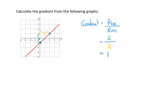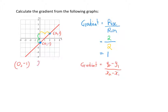I'm also going to calculate the gradient using the second formula: gradient equals y2 minus y1 divided by x2 minus x1. To do this, I need the coordinates of two sets of points. Using my same two points, it's going to be (0, -1) and (2, 1). Writing these points underneath and labelling each: x1, y1, x2, y2.